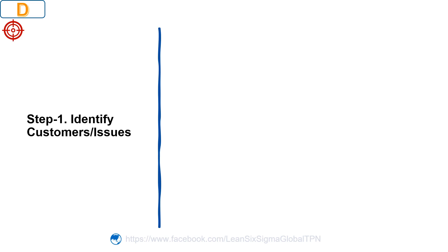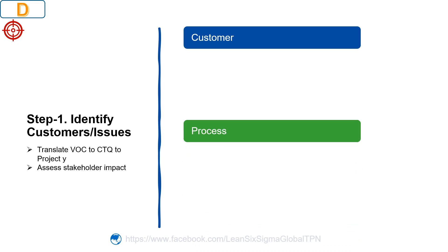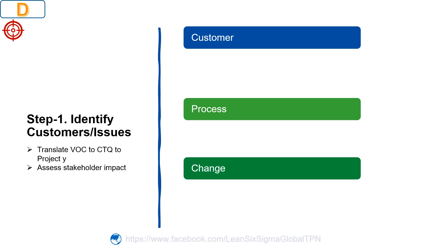The objectives of this step are to translate Voice of the Customer (VOC) to Critical-to-Quality (CTQ), to define the project-wide scope, and to assess stakeholder impacts. In this step, we focus on: who is the customer and what do they need and expect from us; what our process provides versus what the customer is asking for; and what we should do to begin managing the changes that will occur through this project.